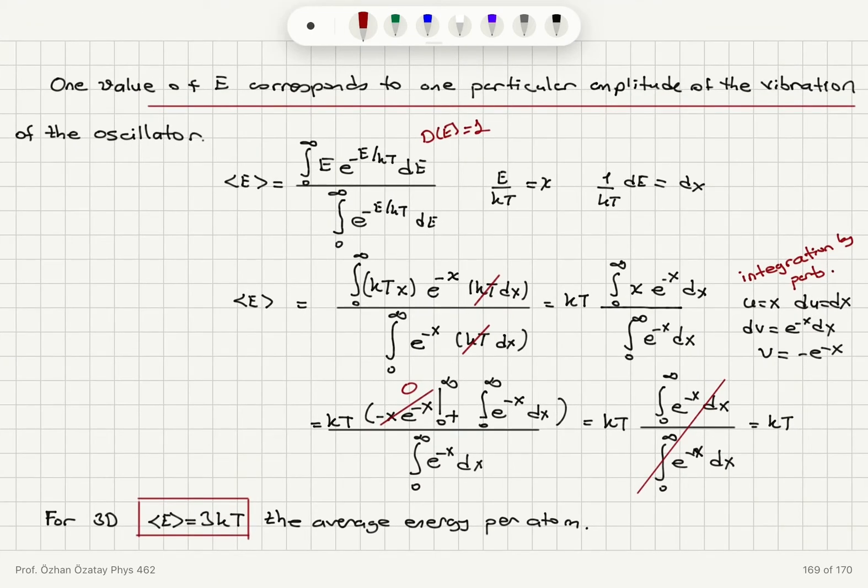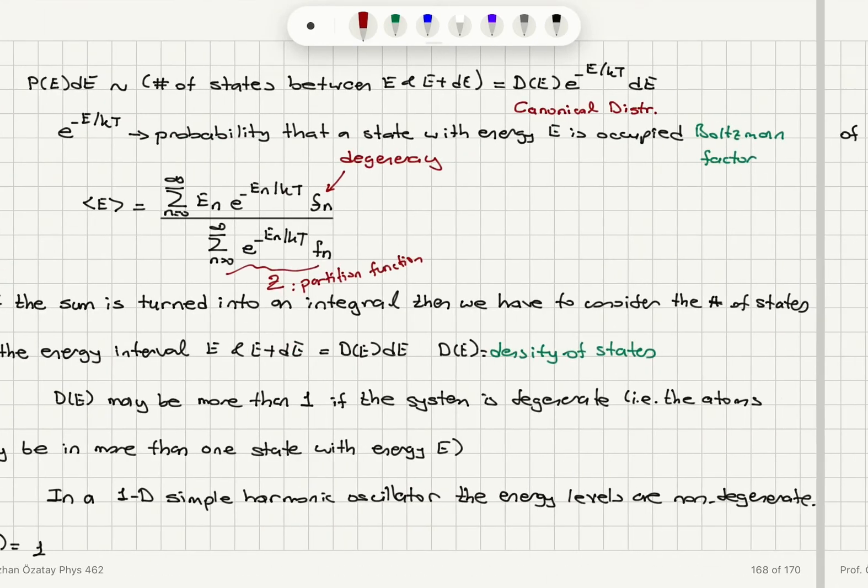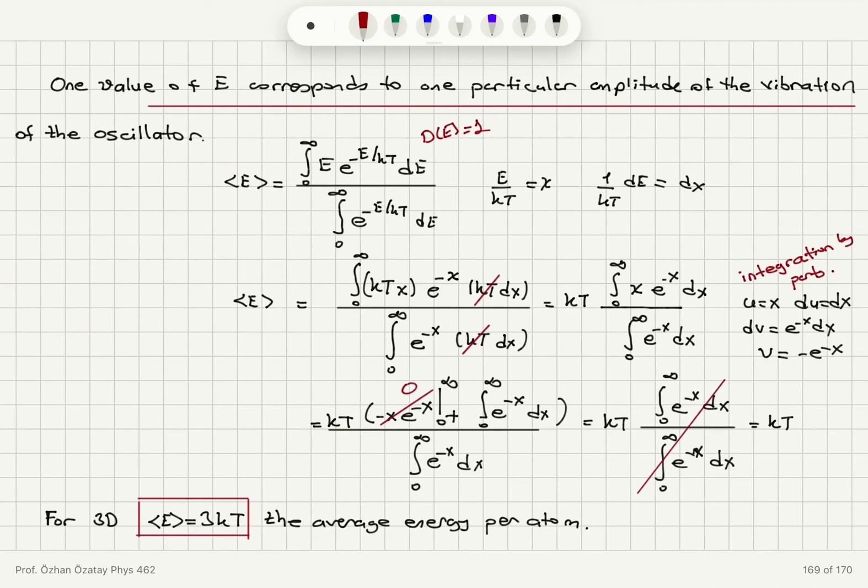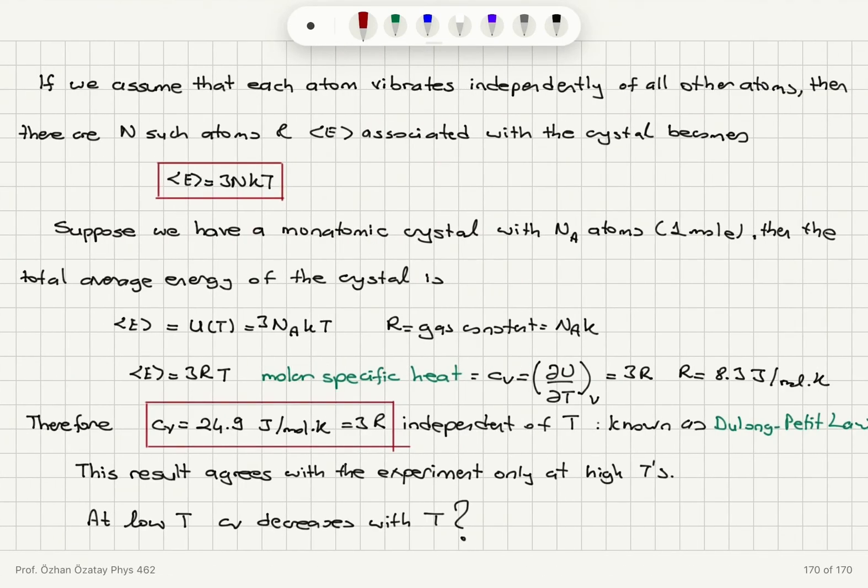For three dimensions, once again, using the equipartition theorem, I could reach the same result. I would have 3kt. So for each axis, x, y, and z, I have a kt contribution. So the total is 3kt average energy per atom.